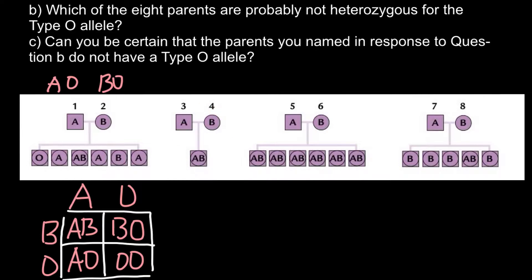Now can we say that this male is heterozygous AO and this female is BO? It is possible, but we are not sure. Maybe this male is homozygous for the A allele, and the female can be homozygous for B or heterozygous. In both cases they may have progeny that is AB, so we cannot tell for sure.